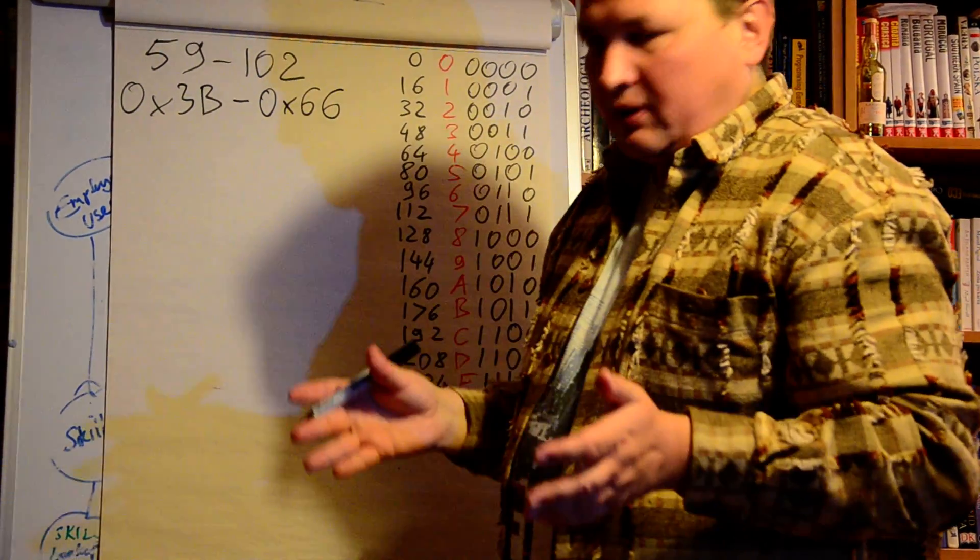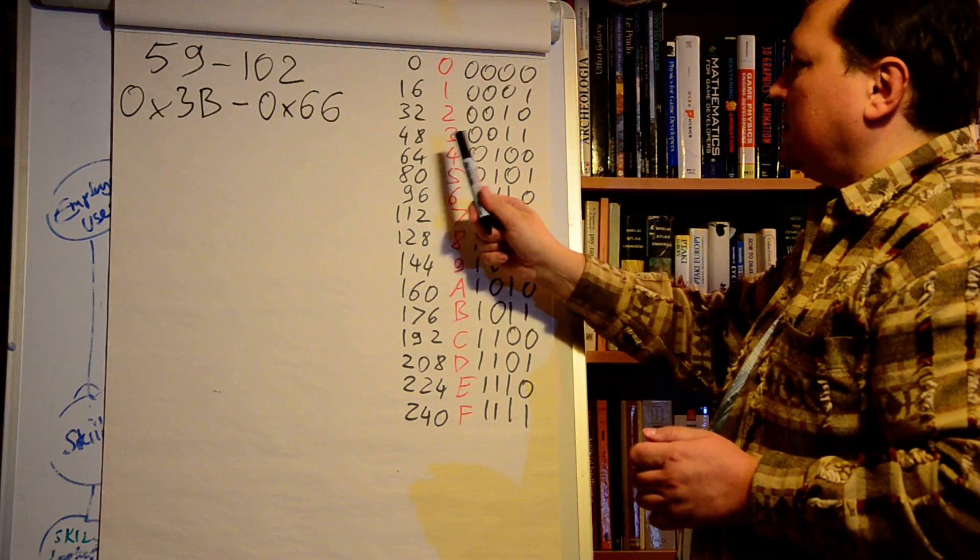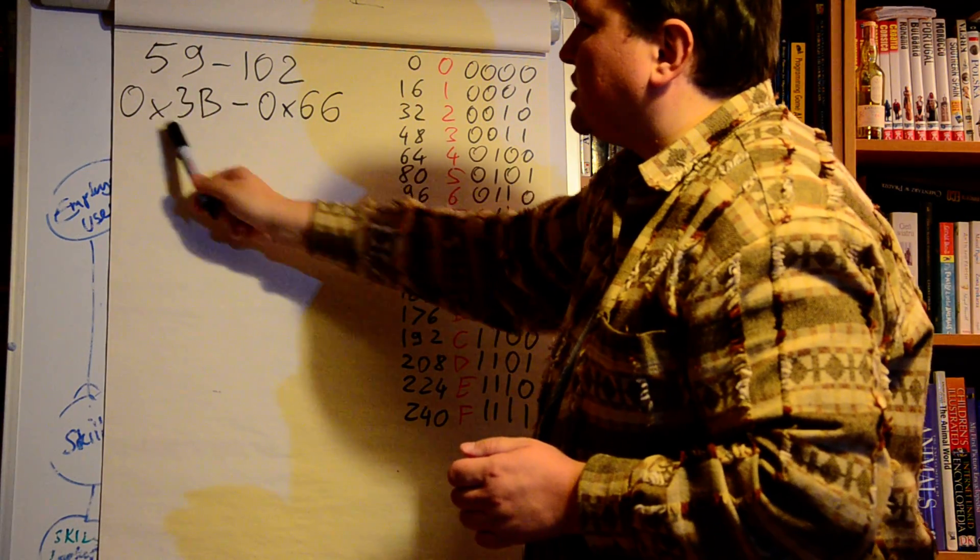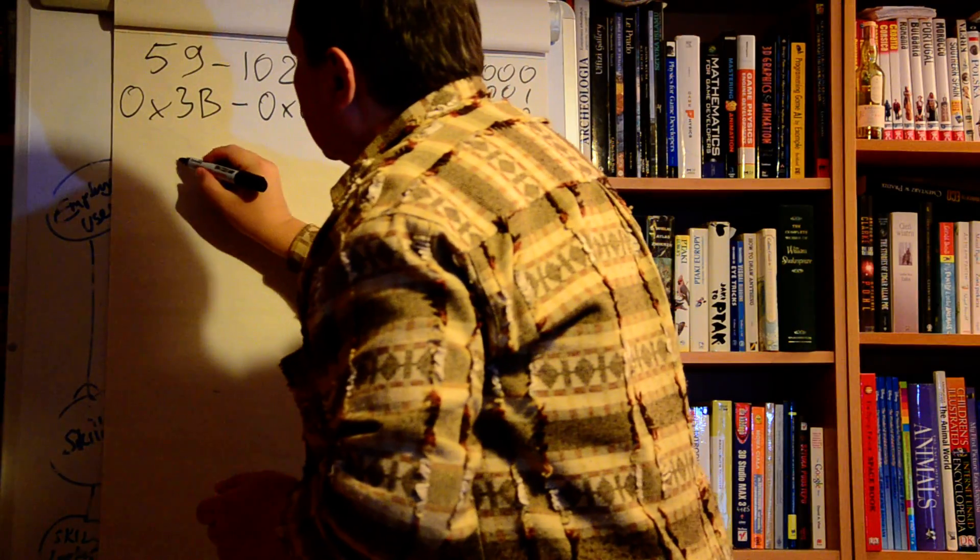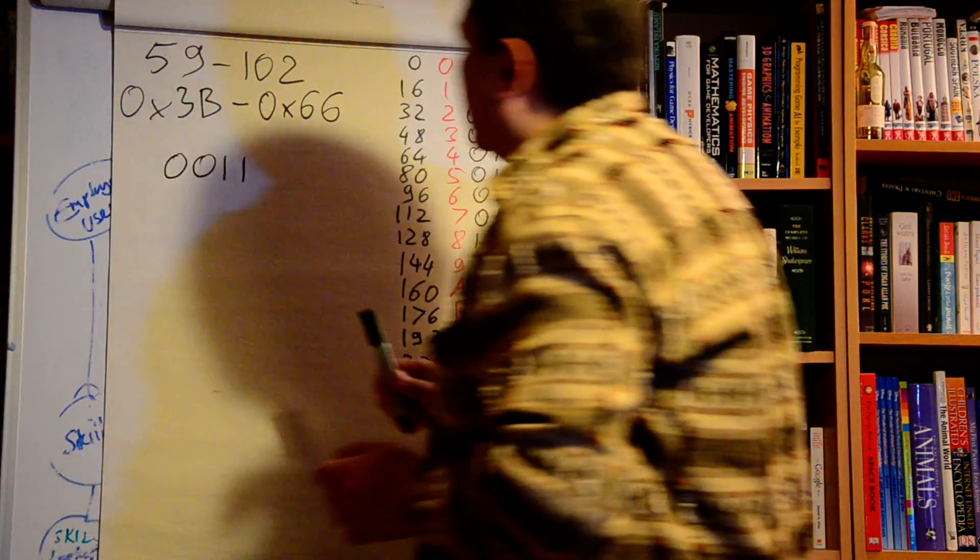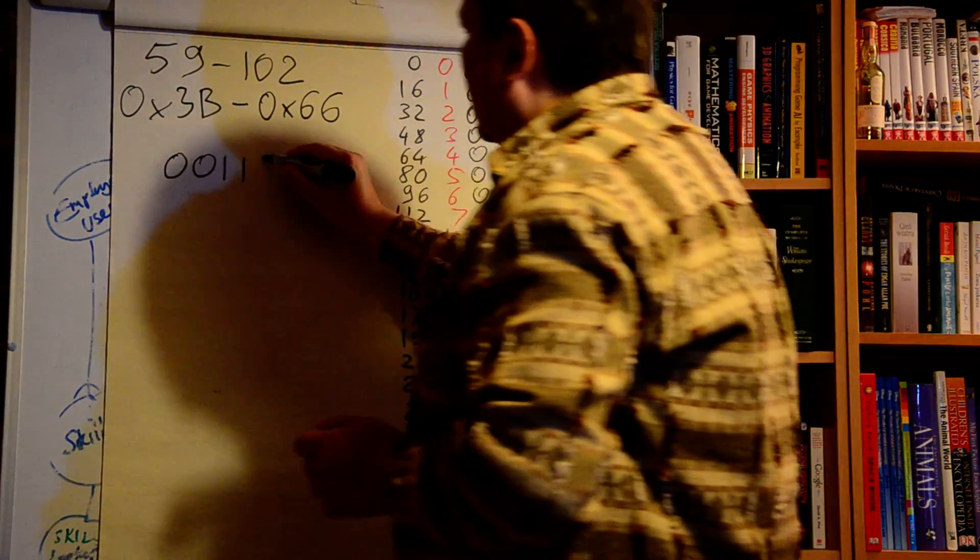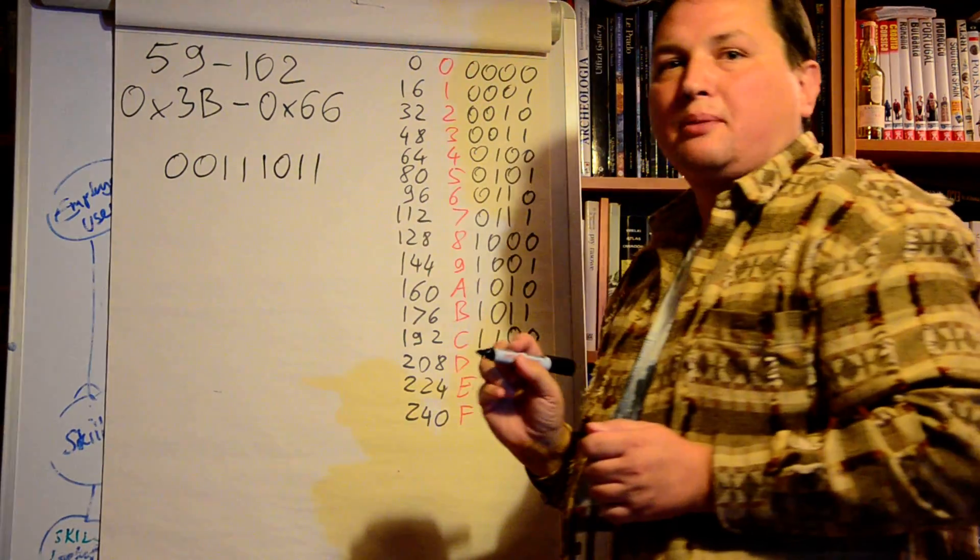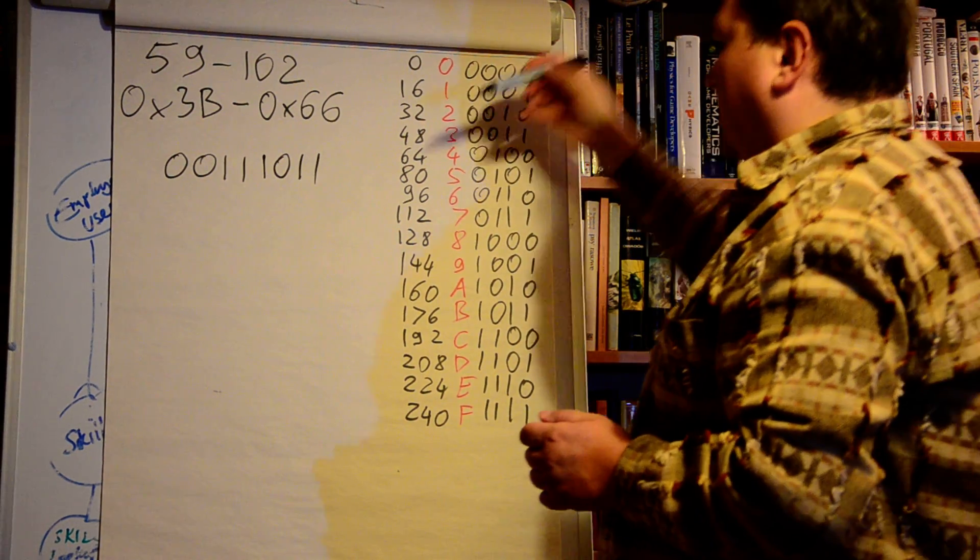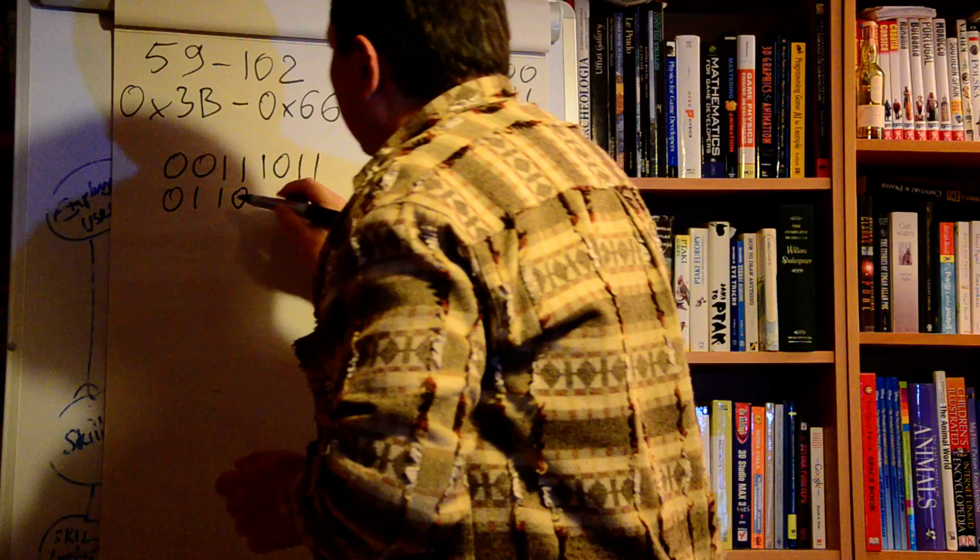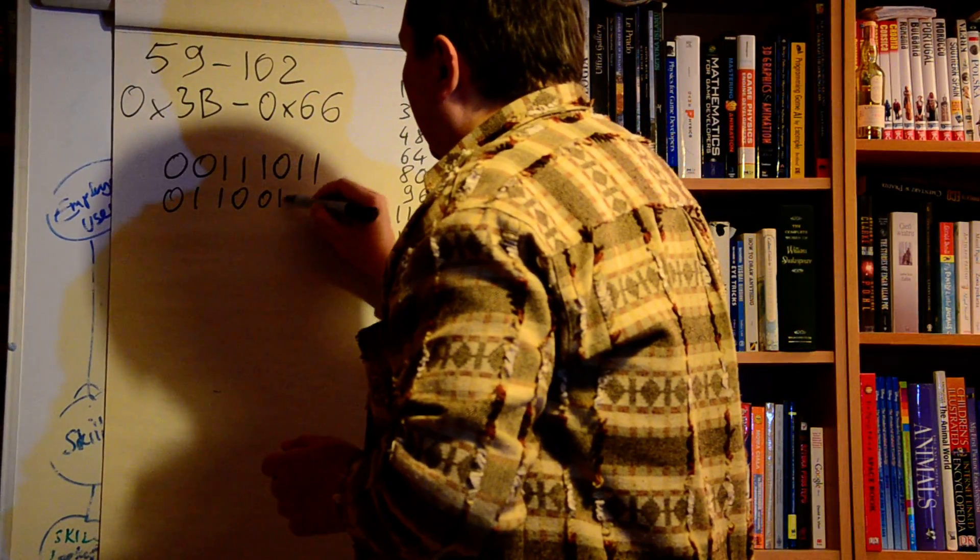Converting this to binary is very easy, particularly if you have a table like this. So we go digit after digit. First we will code the digit 3, which is 0011. And then the other digit B, which is 1011. And this is our first number. The second number, 6, is 0110, and the second digit is also 6, so it's again 0110.